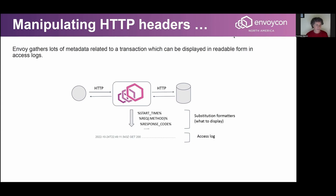Access logs are basically a string representation of data produced during those transactions, and they are defined by a sequence of substitution formatters. A substitution formatter is a string which starts and ends with percentage signs and uniquely identifies the data you would like to display. For example, there's a start time formatter for when the transaction started, one to display a certain header from the request, and the response code received from upstream.